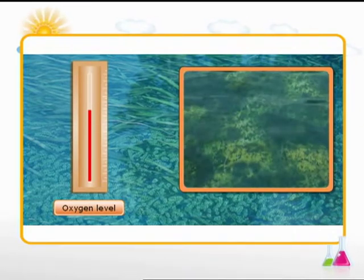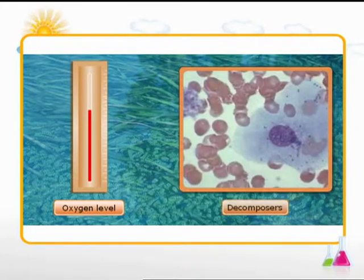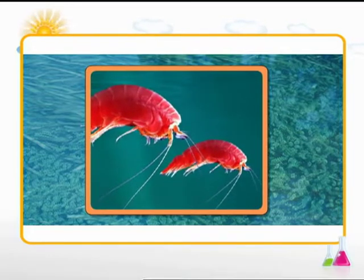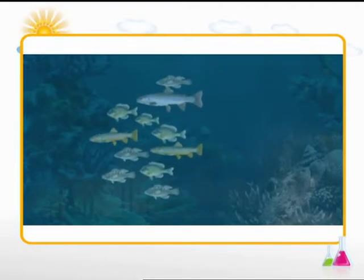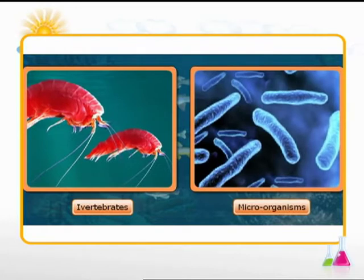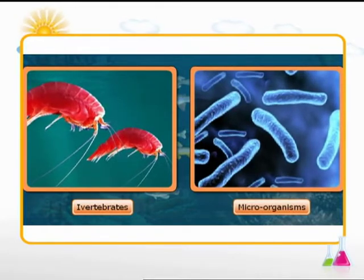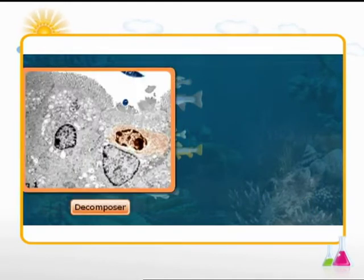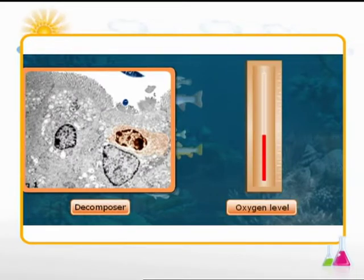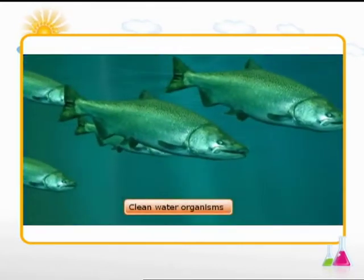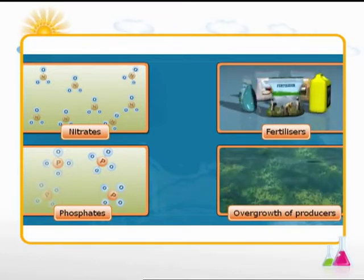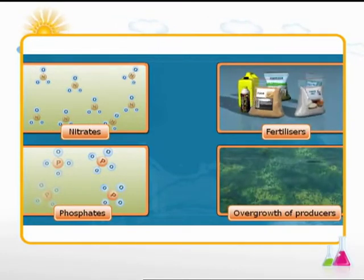Oxygen levels are lowest immediately below the pollutant as the decomposers metabolize waste materials. Organisms which tolerate low oxygen levels are found here. Further downstream from the pollutant, in anaerobic water, one can find invertebrates and microorganisms which can live at low oxygen levels. Finally, when all nutrients in the water are exhausted, the decomposer population will decrease, increasing the oxygen levels which will support clean water organisms again.